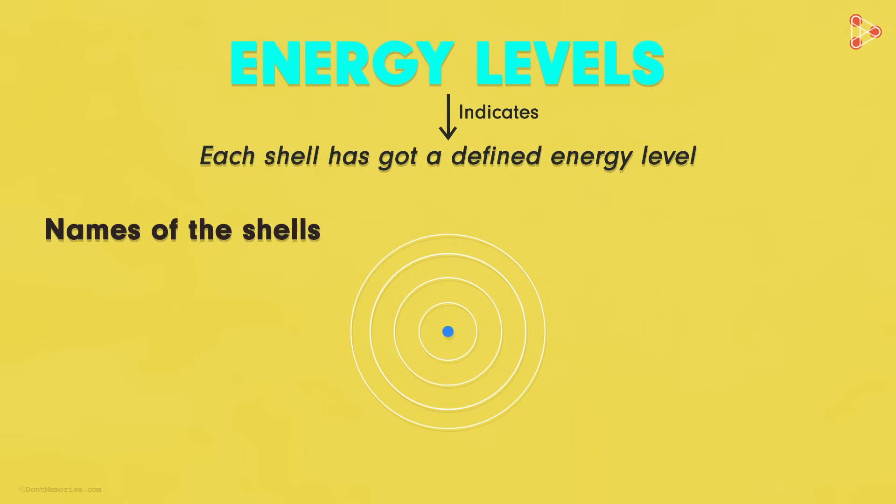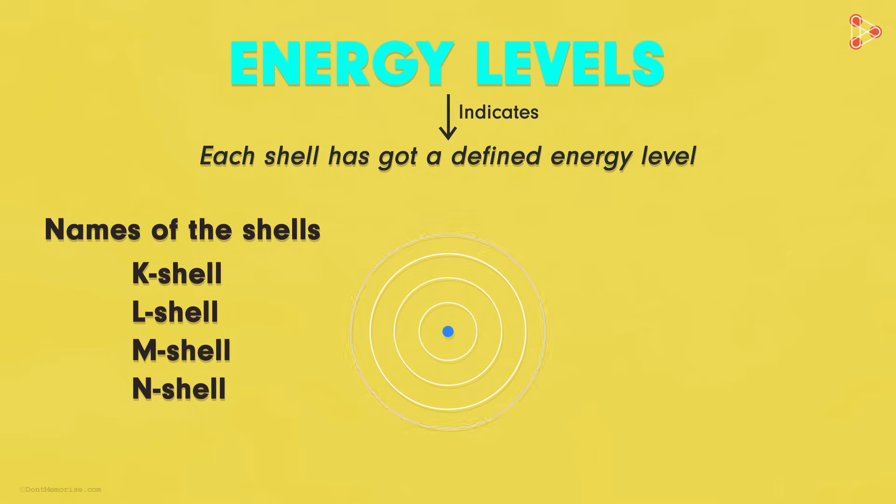And how do we name these shells to indicate their position? It's simple. Beginning from the one near the nucleus, we name them as the K shell, L shell, M shell, N shell and so on.